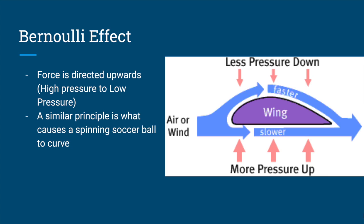One other important thing to note is that objects will always move from high pressure to low pressure. If you take a look at the diagram on the right, that airplane wing moves upward because there's less pressure above it and more pressure below it. The Bernoulli effect is important to us because a very similar principle is what causes a spinning soccer ball to curve — and that principle is called the Magnus effect.